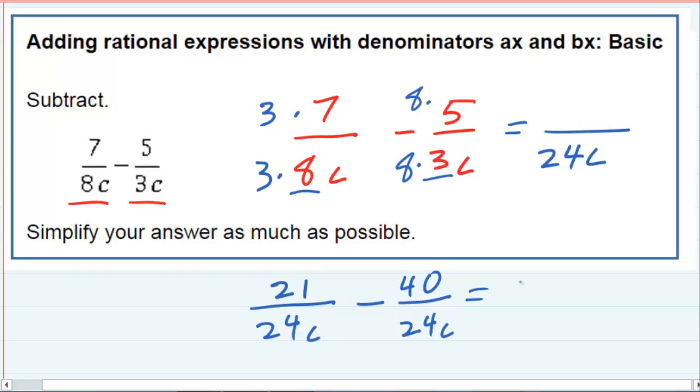So I've gotten a common denominator, I just need to subtract the tops. So I have 21 minus 40. Since I've got a larger number being subtracted from a smaller number, that's going to give me a negative. And 21 minus 40 gives me 19. So a minus 19, and of course I keep that denominator for addition and subtraction. So minus 19 over 24c is our solution.